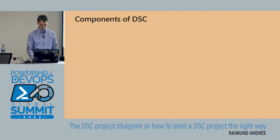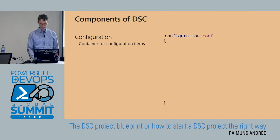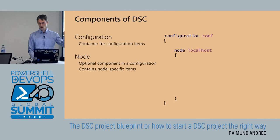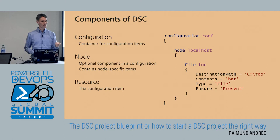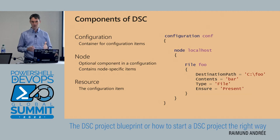Looking at the components of DSC: everything is defined in a configuration. The configuration consists of a node block, and inside the node block you have your configuration items or DSC resources. I prefer the term 'config items' because the term 'DSC resources' is overloaded — you have DSC resource modules and DSC resources inside the config as well. DSC has many terms that are not really well-defined. If you have any questions, just ask them and we can handle them right away.